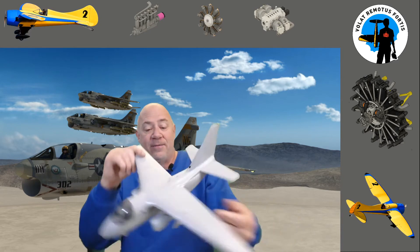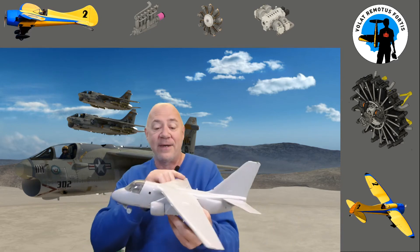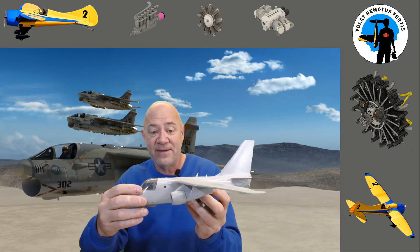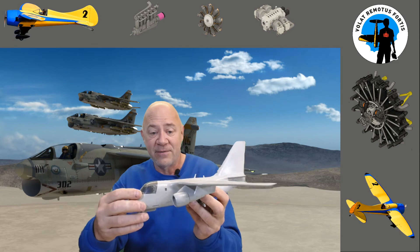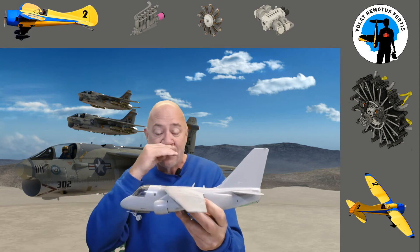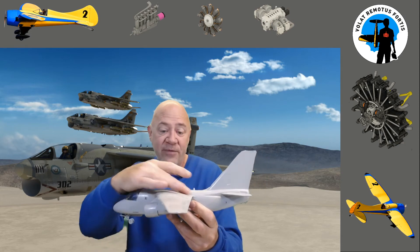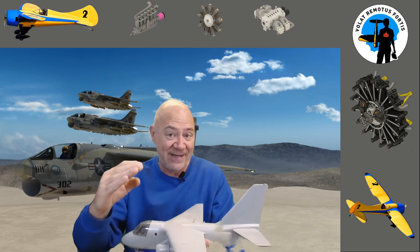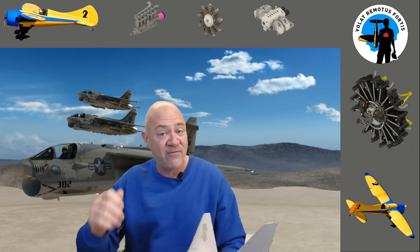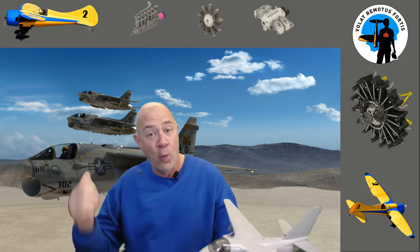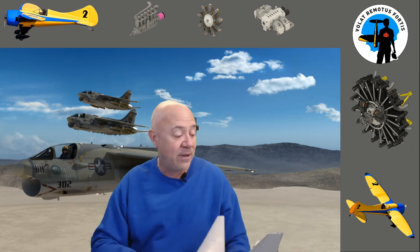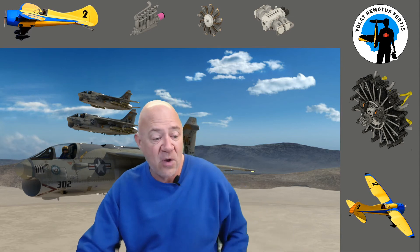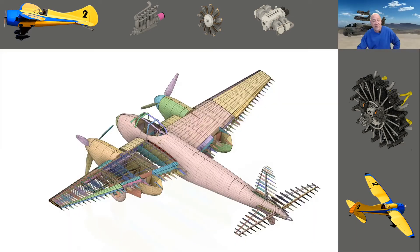If you look at an airplane like the A-10, it has quite a bit of positive incidence at the root where the wing connects to the airplane. The Viking, believe it or not, has a lot - it's hard to see, but there is about three degrees of positive incidence. Don't confuse incidence with washout.